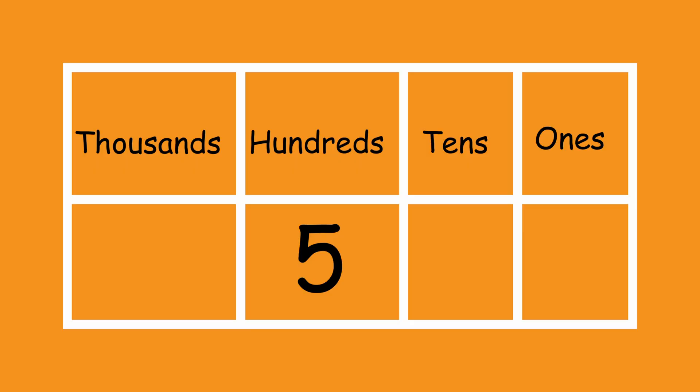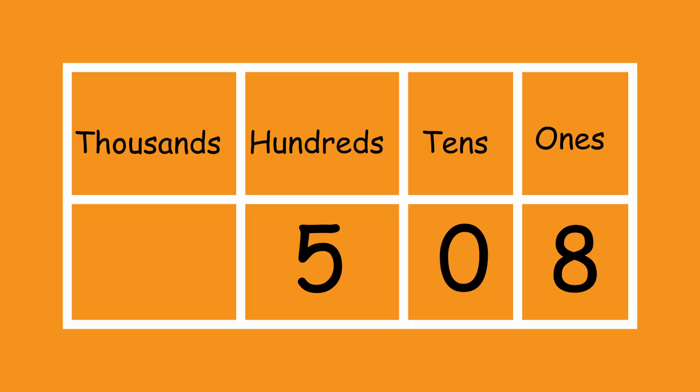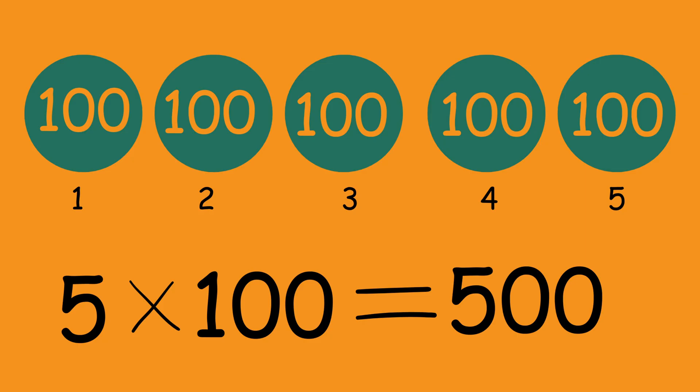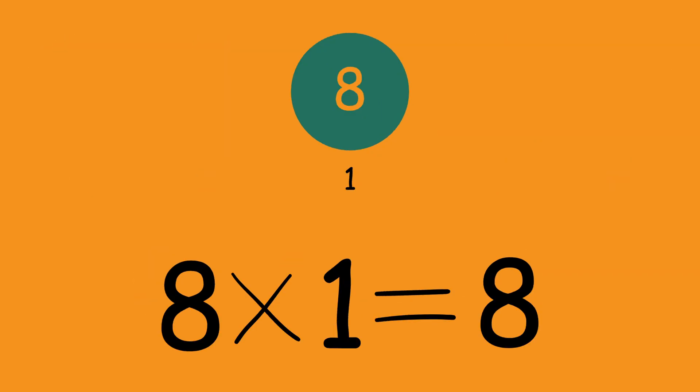Now let's look at another example. When you have the number 508, can we break this down into place values? 5-0-8. Where does the five sit? The five sits in the place of hundreds. Where does the zero sit? It sits in the place of tens. Where does the eight sit? In the place of ones. That means 508 is basically five times one hundred, plus zero times ten, plus eight times one.